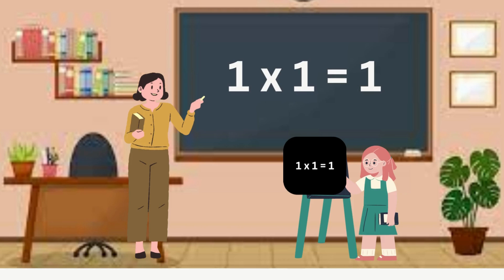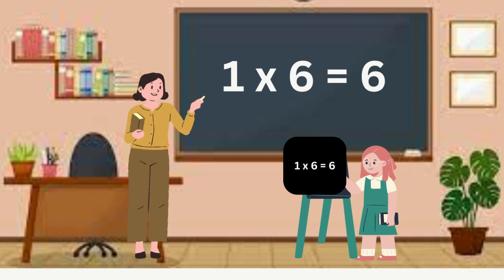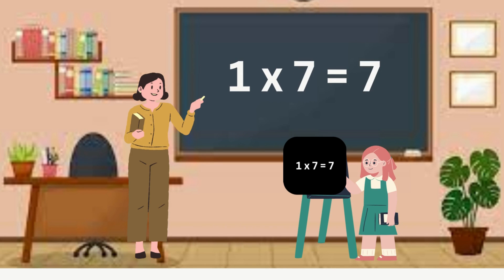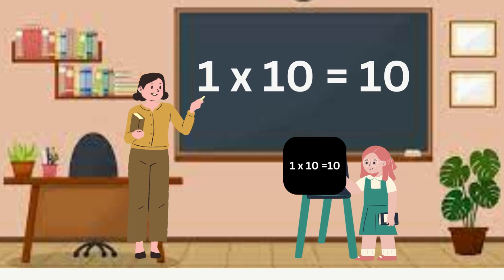One. One ones are one. Two's are two. Three's are three. Four's are four. Five's are five. Six's are six. Seven's are seven. Eight's are eight. Nine's are nine. Ten's are ten.